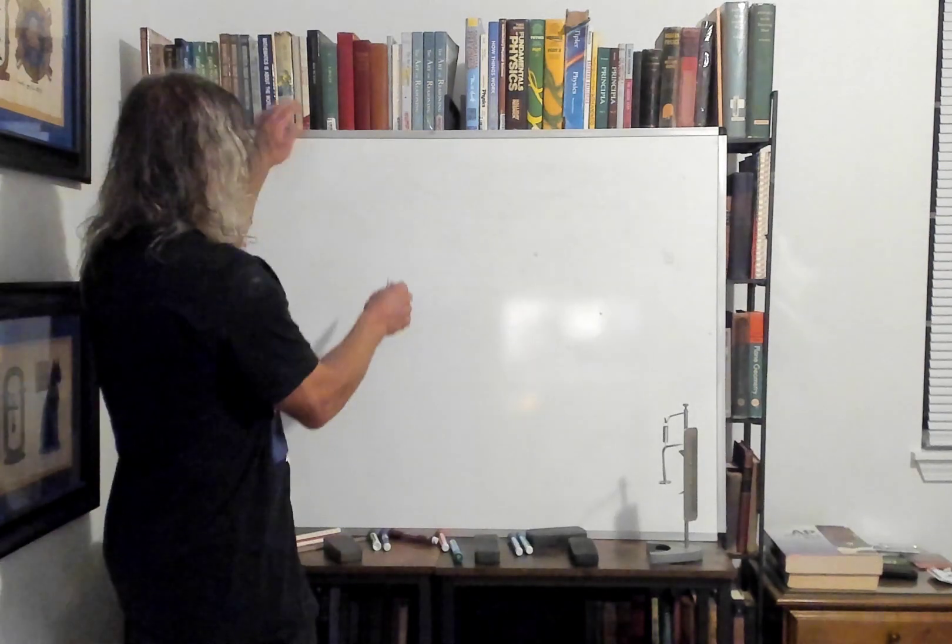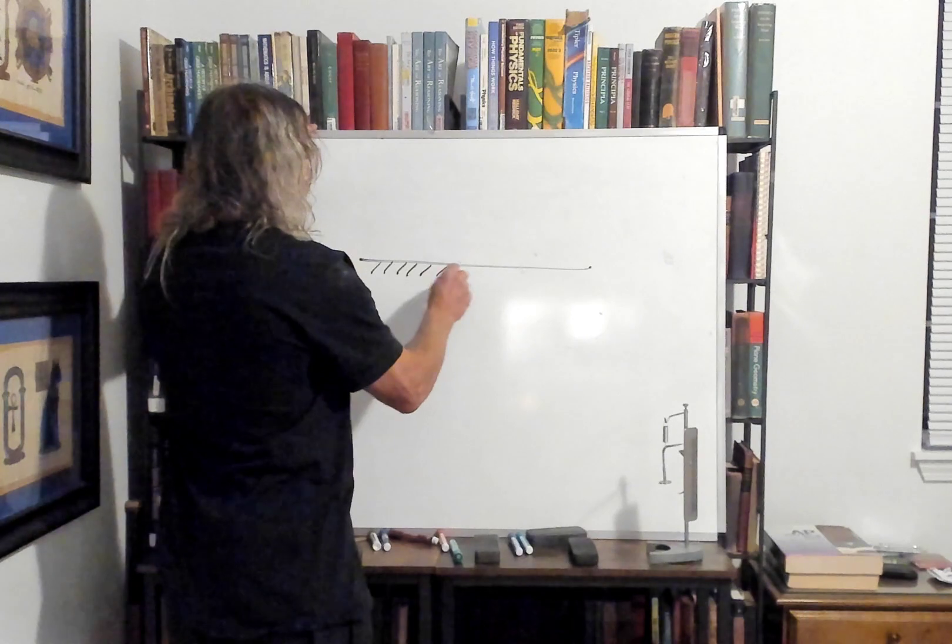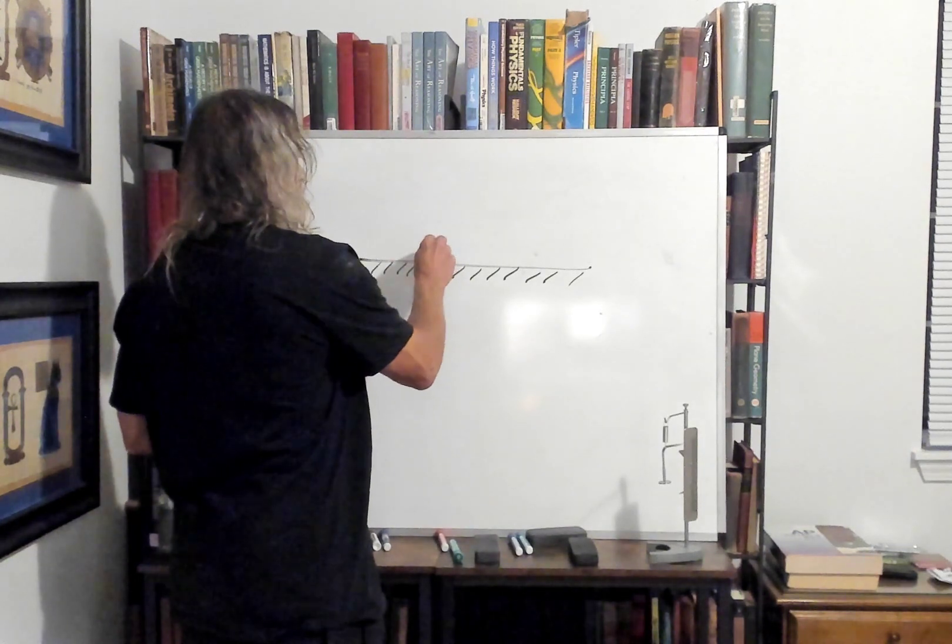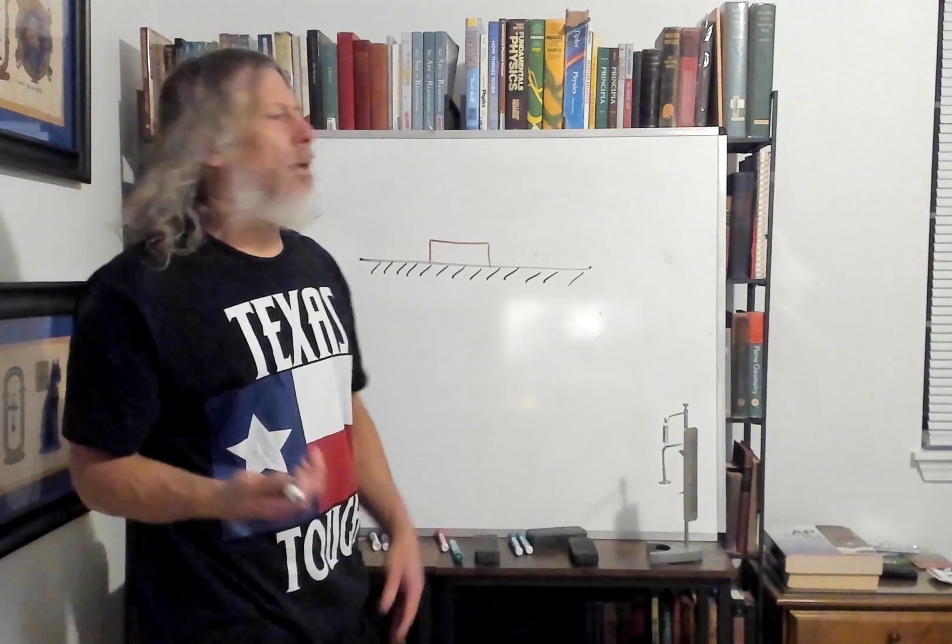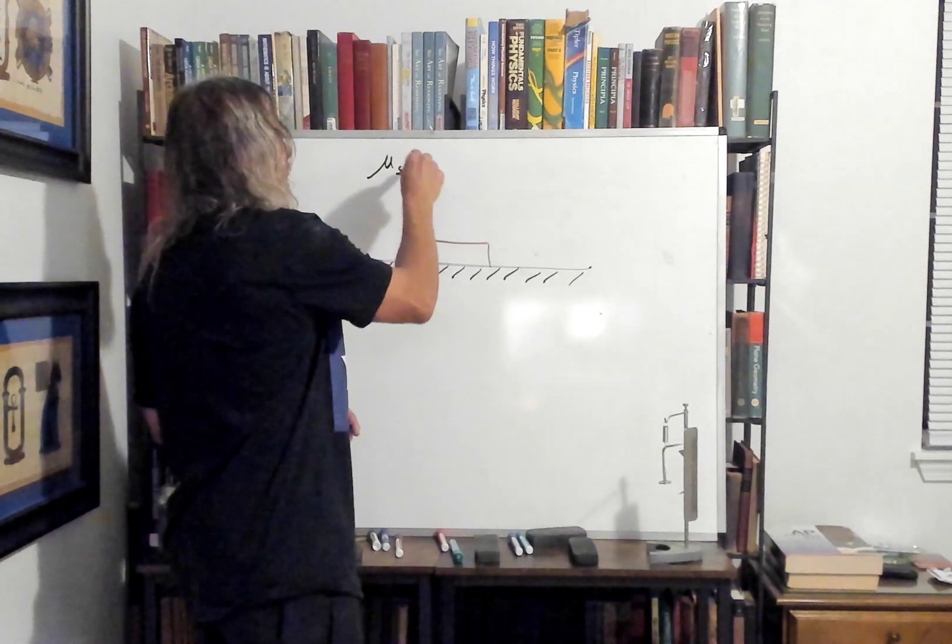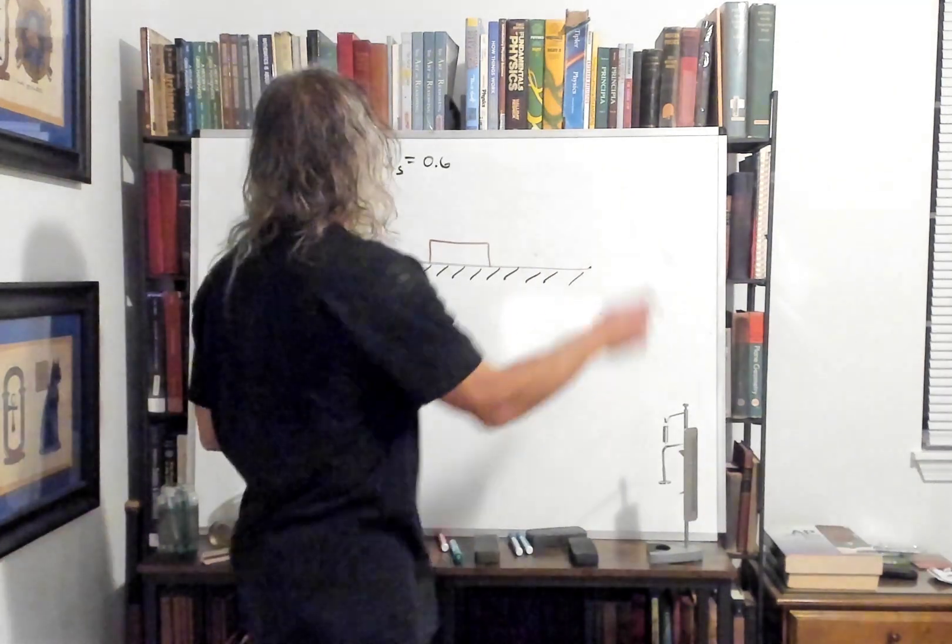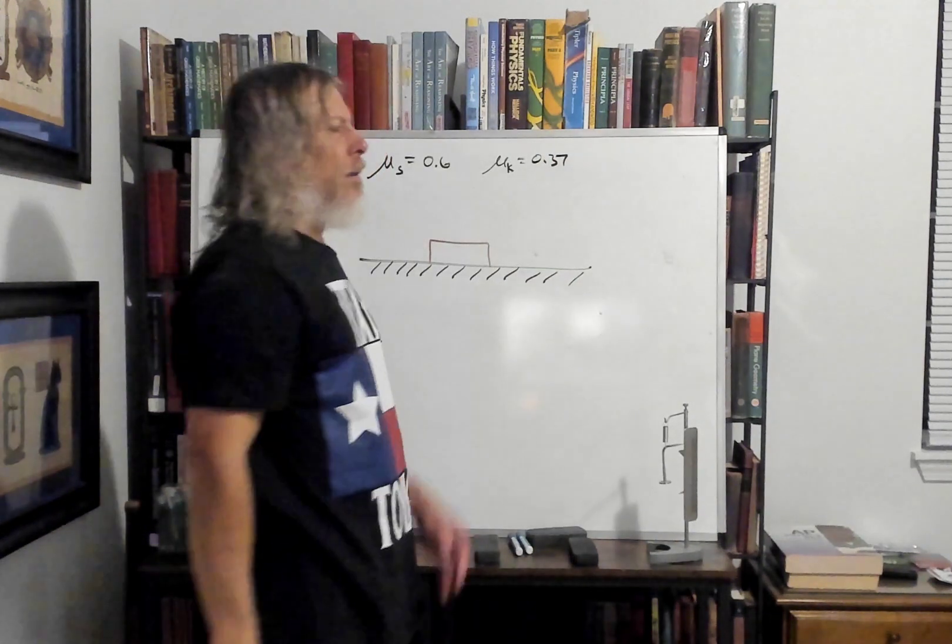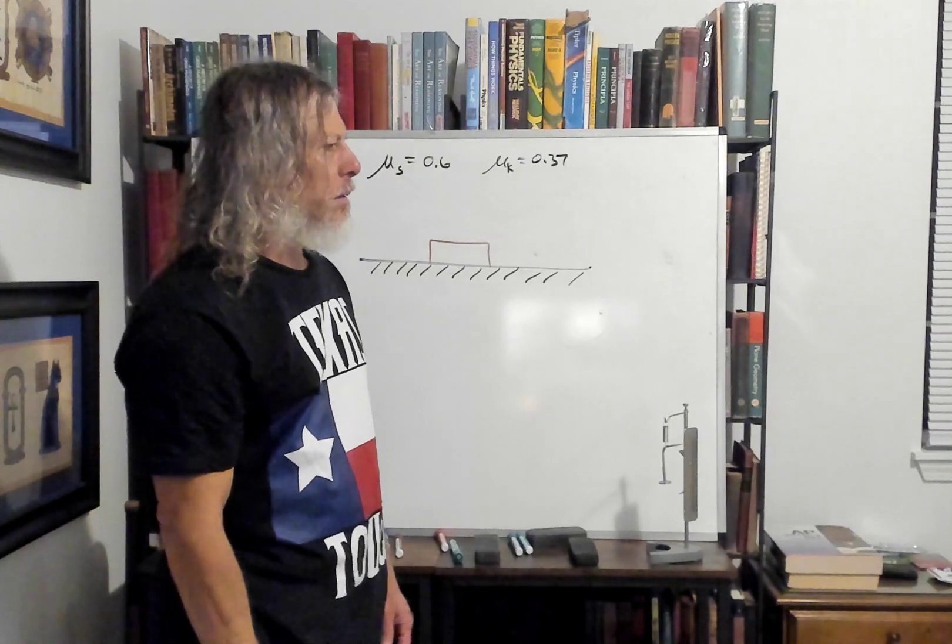Let's say we have a surface and on the surface we have a block. For illustrative purposes, let's make something up so we can order this out. The coefficient of static friction is 0.6, the coefficient of kinetic is 0.37, and we'll say the block is a mass of 10 kilograms.